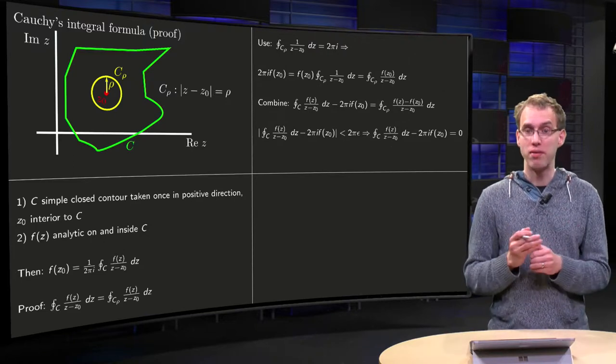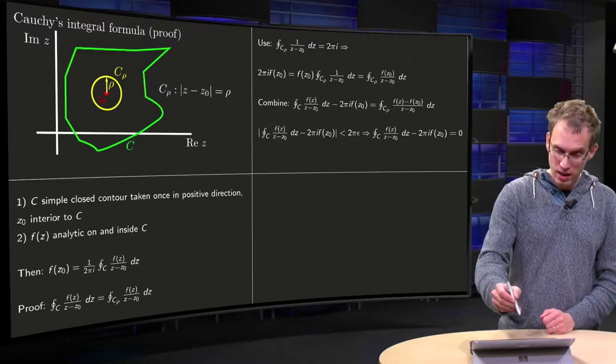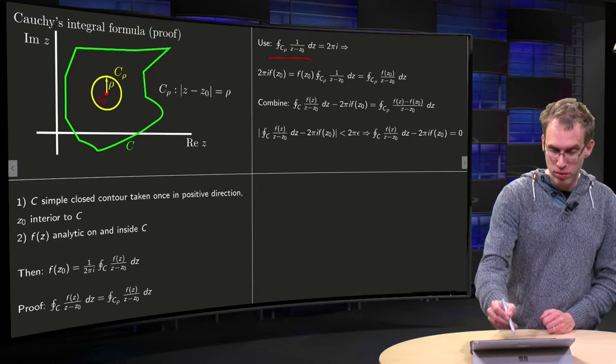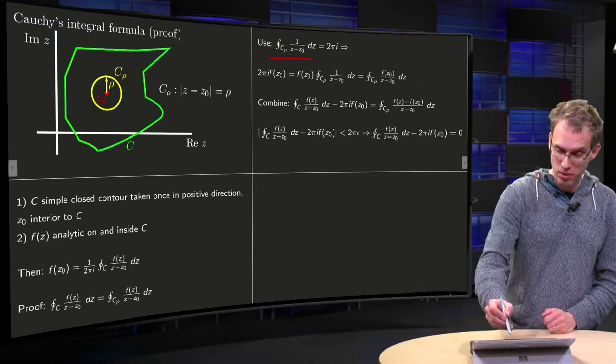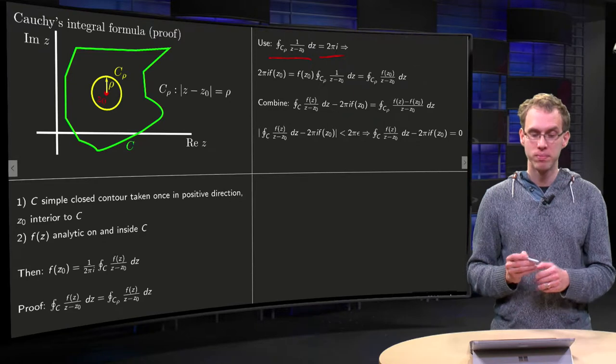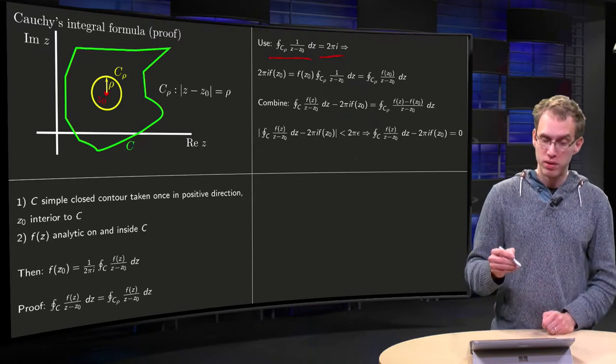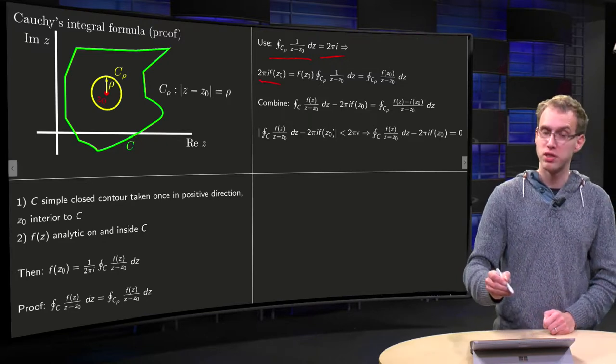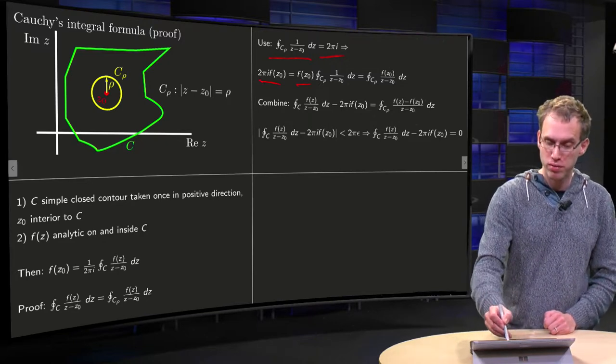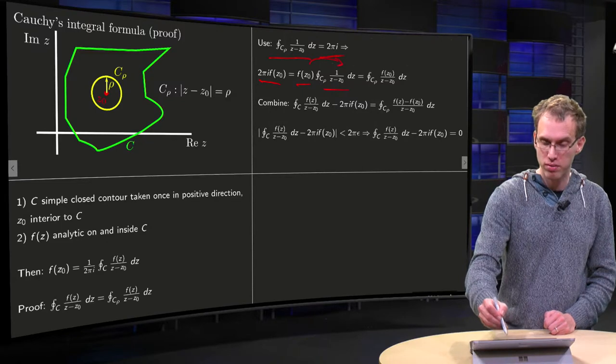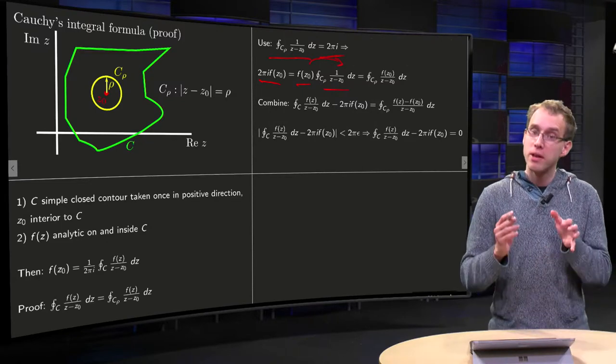Then, if we wouldn't have our f of z, we can use the integral of the function 1 over z minus z0 equals 2 pi i. And then, if you multiply with f of z0, you get 2 pi i times f of z0. You can take f of z0 in front of the integral, and you can take the integral of f of z0 inside.